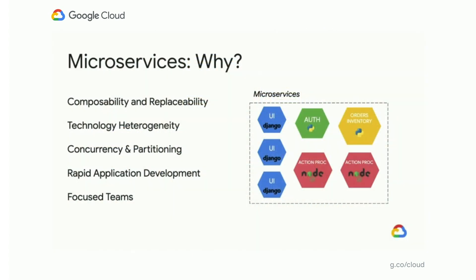How do you modernize your application? The answer is moving towards a microservices architecture. The first key aspect is composability and replaceability — you can take these microservices, package them differently, and give different experiences to your end users. You can also replace one version of a microservice with another.